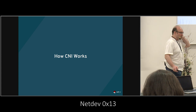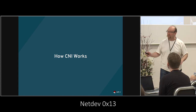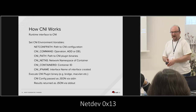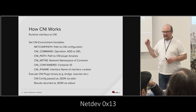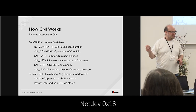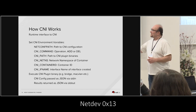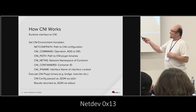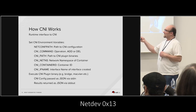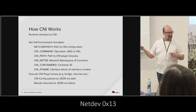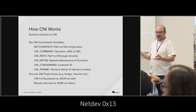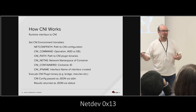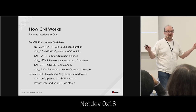Now we're going to get into how CNI works, and it's really simple. This is what you need to do to actually get an IP address inside a container. These environment variables get set — you need to tell CNI where you can get to the configuration, what the command is (add or delete), the path to the actual binaries, the namespace of the container, the container ID, and the interface name. eth0 is the default.